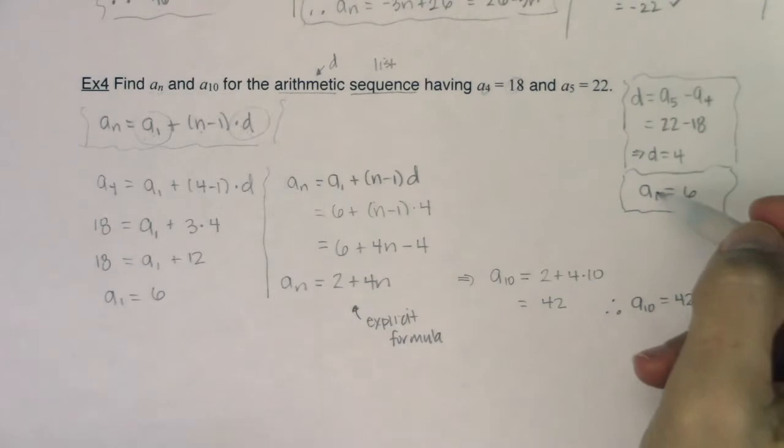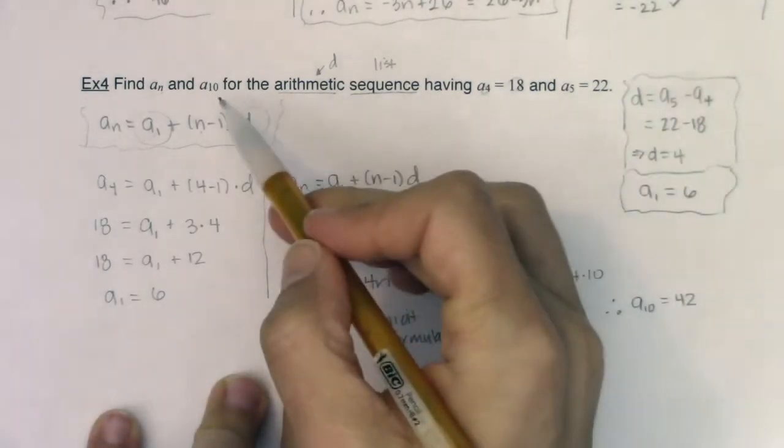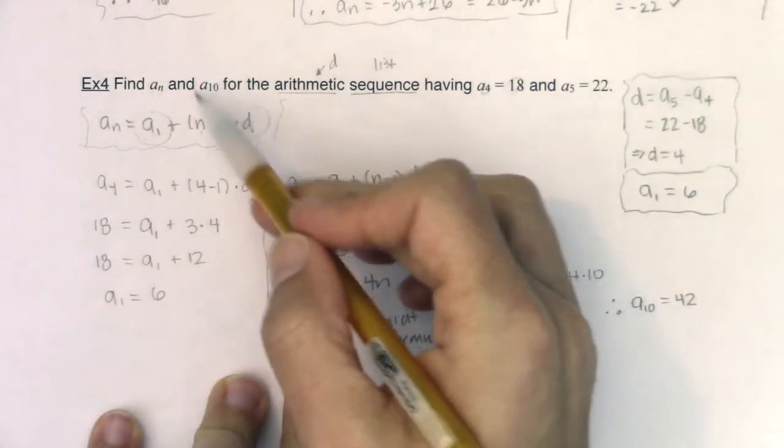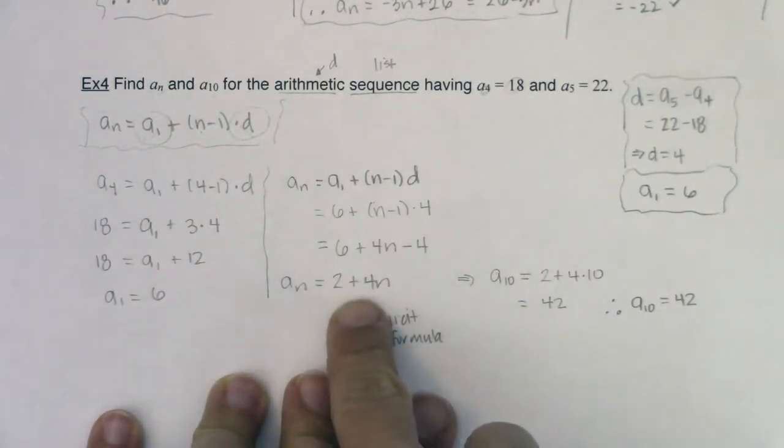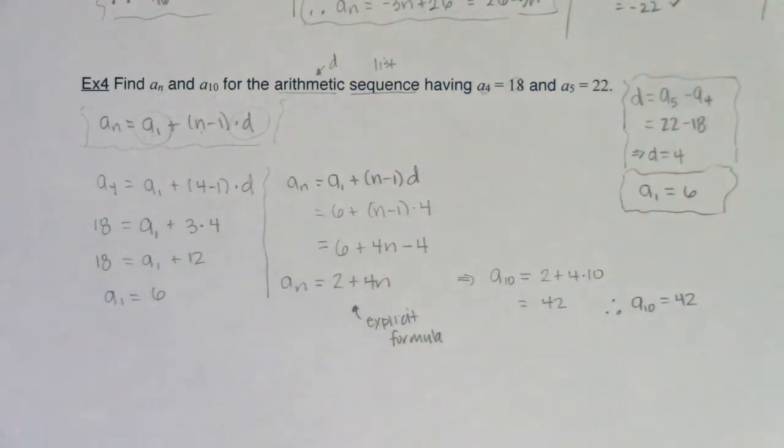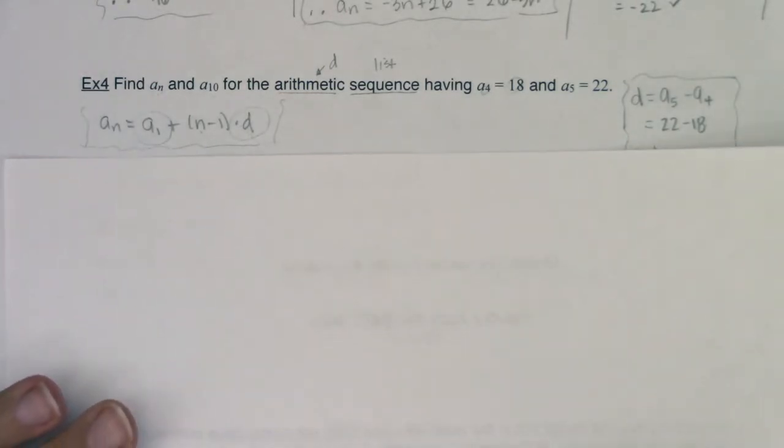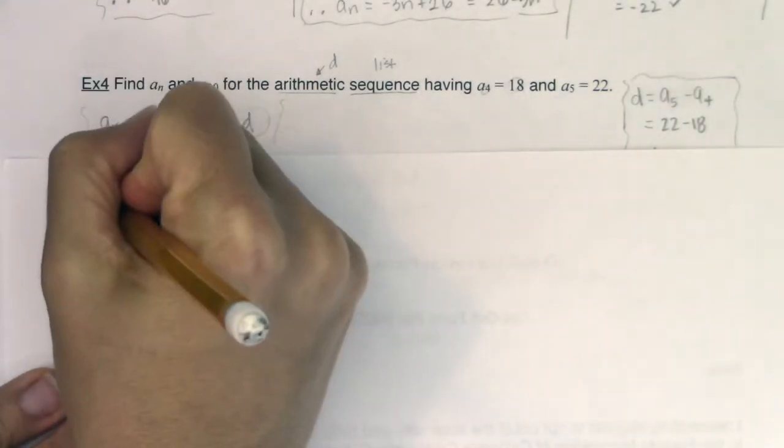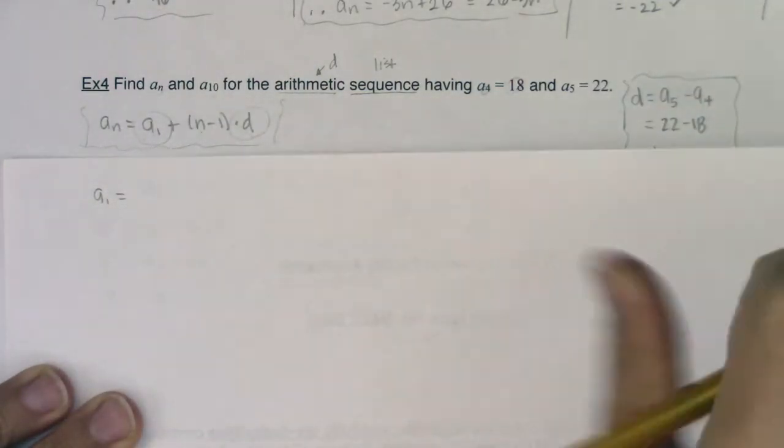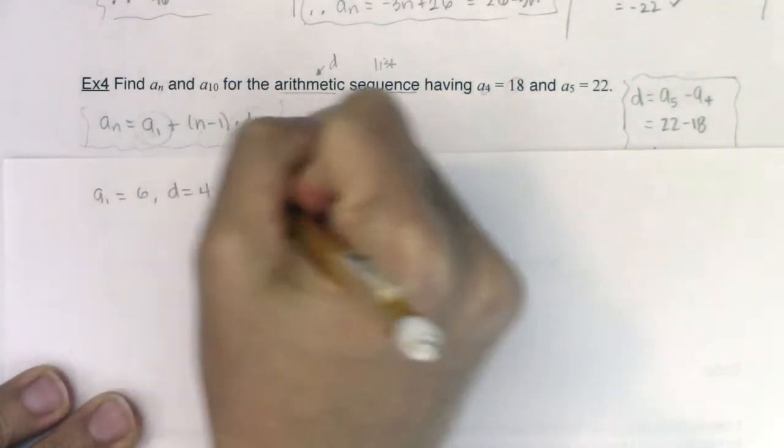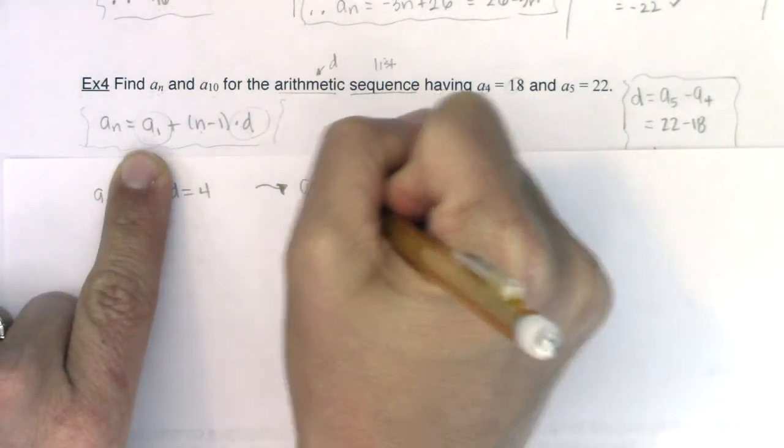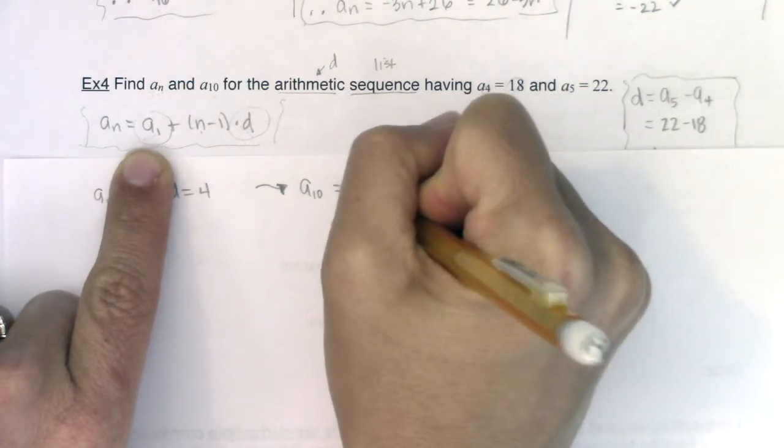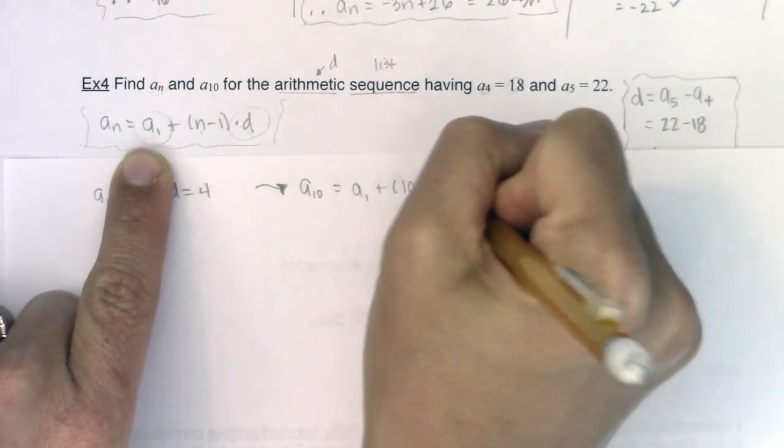Now I do want you to just see one alternate way that you could have done this. So let's say you found d and a_1 and you wanted to do this first. Let's say you wanted to find a_10 first. Even though I just went through my whole spiel about how I like finding the explicit formula first and then plugging it in. Let me show you just a different approach to this. So what I could have done, keeping in mind we knew a_1 was 6 and d was 4, what I could have done is I could have used this formula now and found a_10.